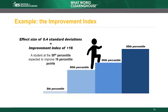For example, if the average impact of an intervention is 0.4 standard deviations, it can be shown that the average comparison group student — a student at the 50th percentile — would be expected to score at the 66th percentile if he or she had received the intervention. The difference between 66 and 50, which is 16 percentile points, gives the Improvement Index. The WWC Study Review Guide calculates the Improvement Index for reviewers, and the WWC Procedures Handbook includes more information.